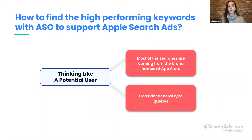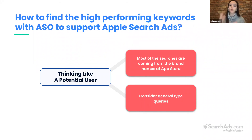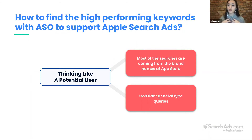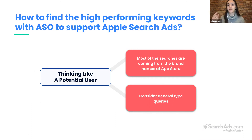Next comes thinking like a potential user. As you may know, most searches come from brand names on the App Store. Some user acquisition managers prefer not to bid on their brand names, but I'd like to remind you that there are many competitors willing to take your users. If you're not bidding on your brand name, one of your competitors is — and they might steal your users. Why would you allow them to steal a piece of your cake?